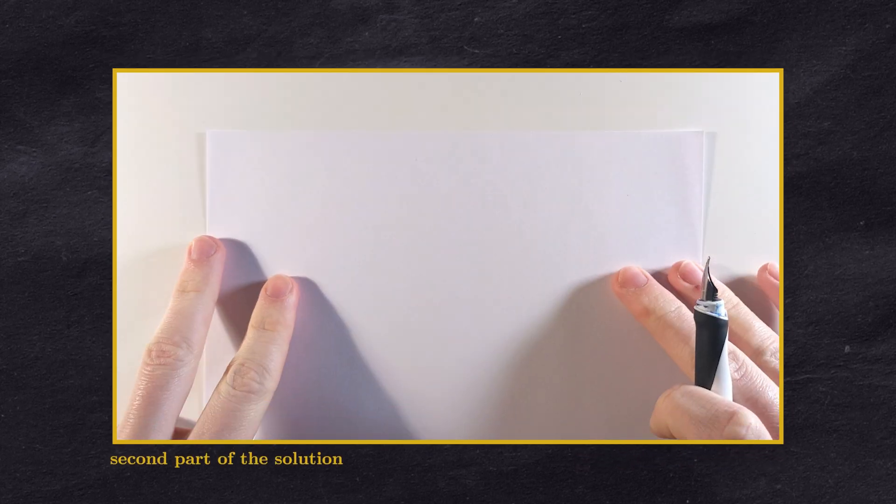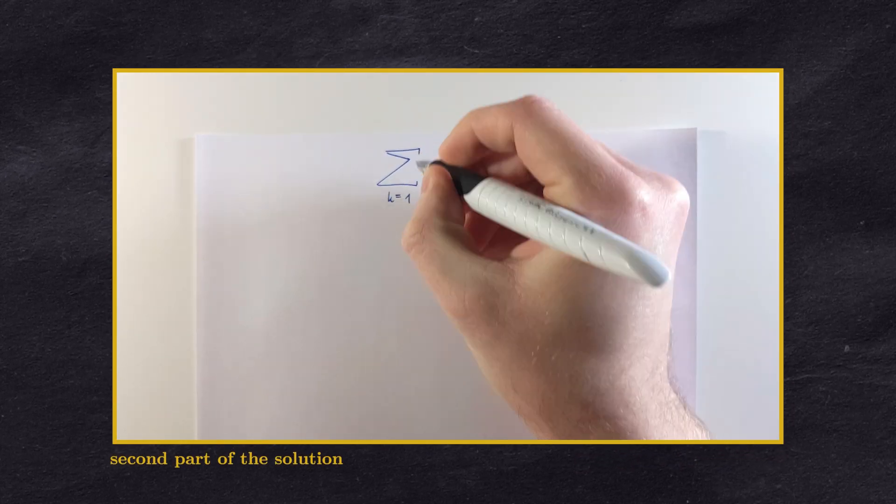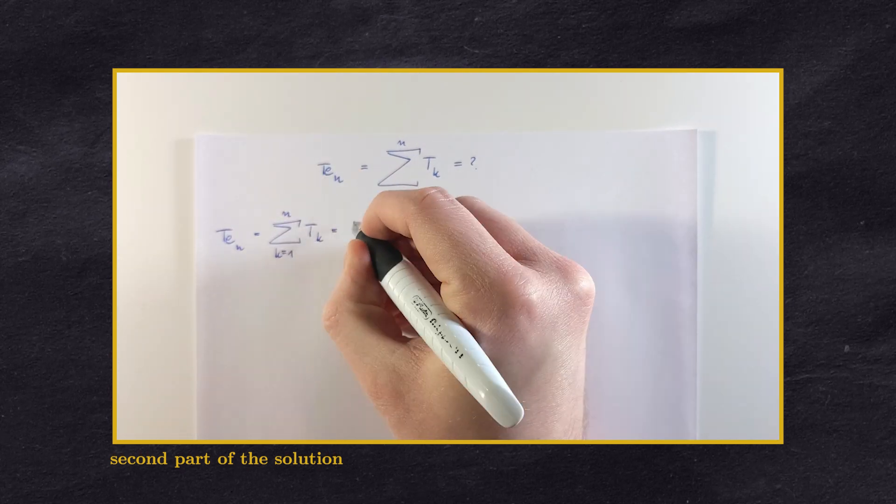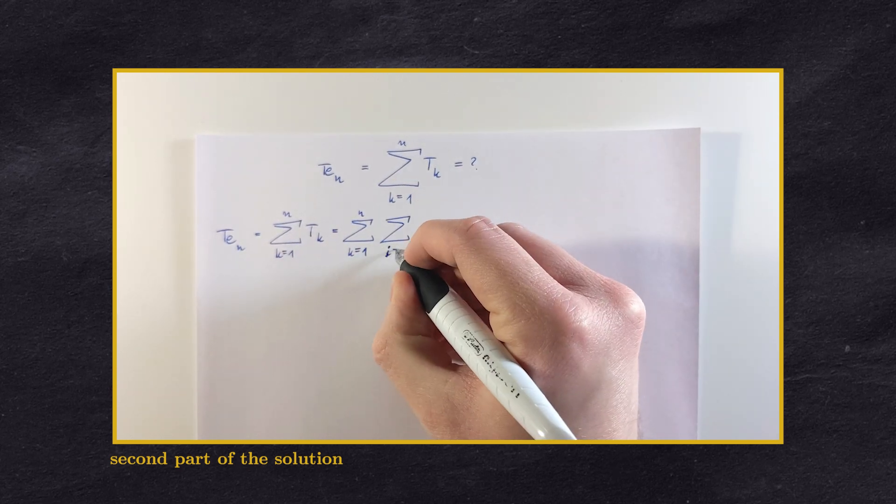Now let us get back to the tetrahedral numbers, which we'll denote with ten. We are going to use the same switching the sums trick as in the case of triangular numbers.